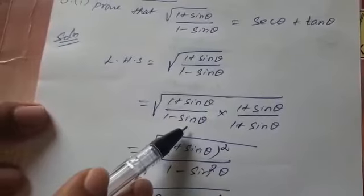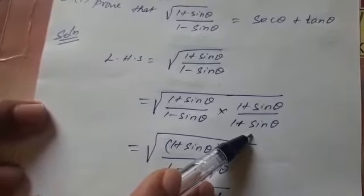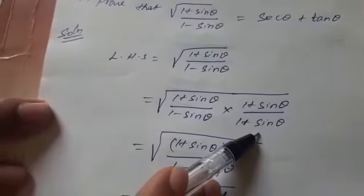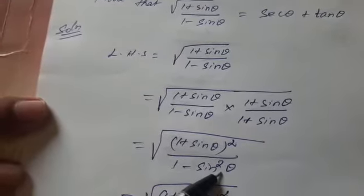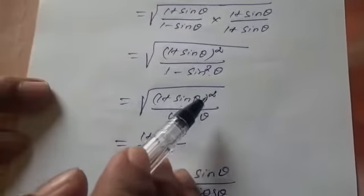(1 minus sin theta) into (1 plus sin theta) — using the identity (a minus b)(a plus b) equals a squared minus b squared — gives 1 squared minus sin squared theta, which equals 1 minus sin squared theta. So we have the square root of (1 plus sin theta) squared over (1 minus sin squared theta).